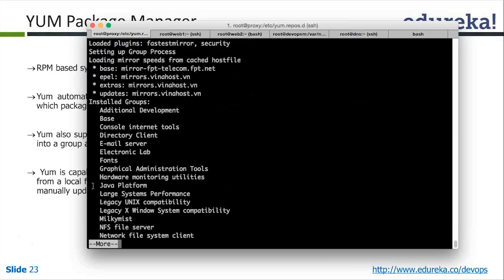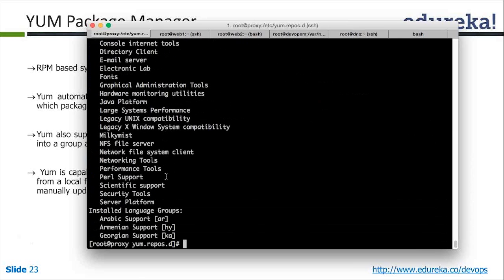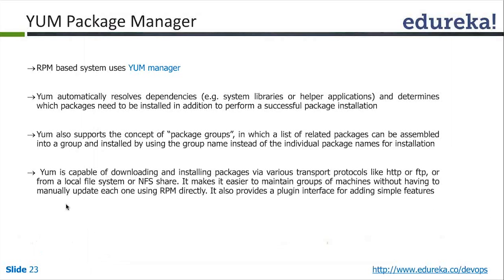You can package your applications into groups. So if you wanted a complete Java platform, you can just say 'yum groupinstall Java platform', or you could have a development platform. These are default groups which exist as part of your existing YUM tools. YUM is also capable of downloading and installing packages via various transport protocols like HTTP, FTP, or from your local repository — and today everything is around HTTP. No more FTP and no more NFS shares for installing. Everything has consolidated into the web way of doing things.